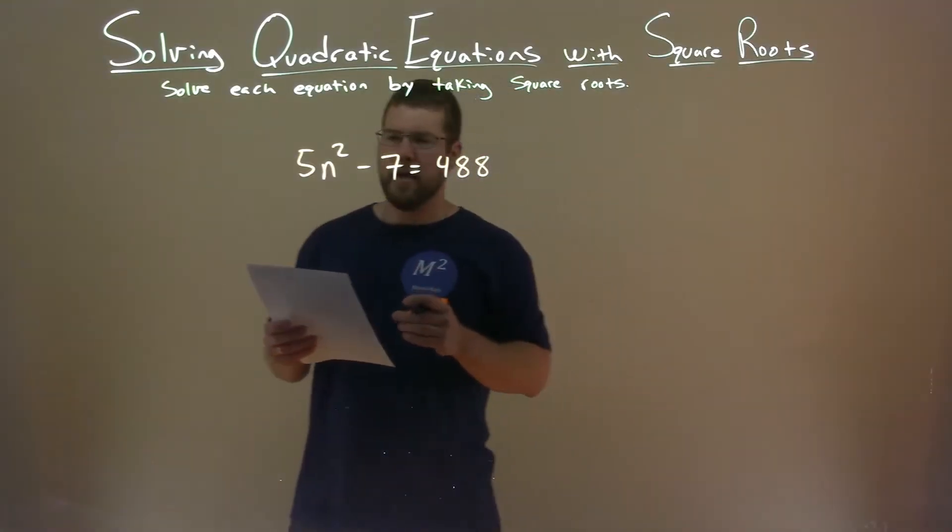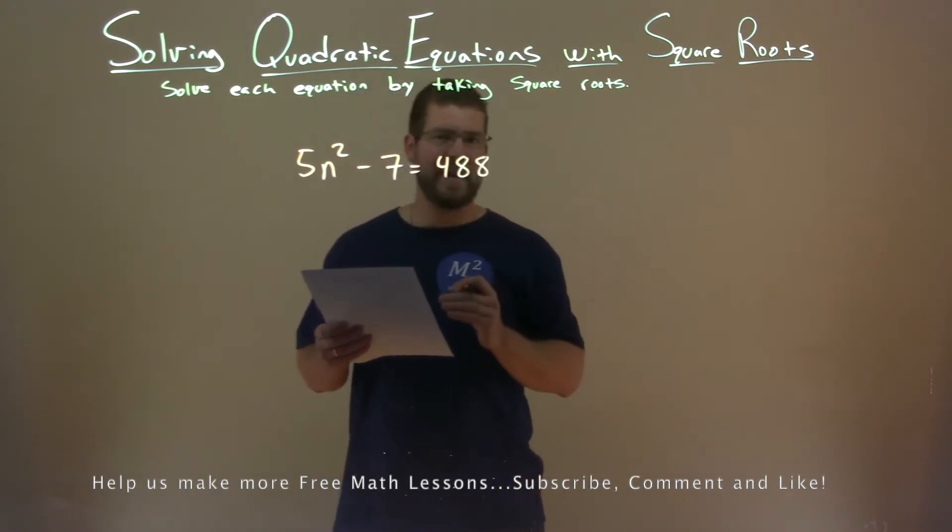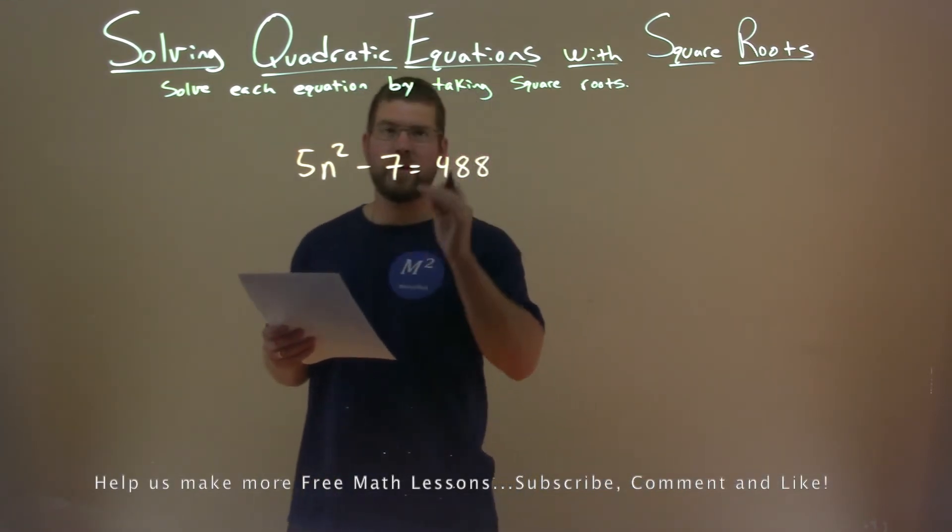We're given this problem right here. 5n squared minus 7 equals 488, and we're going to solve this by taking some square roots.